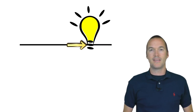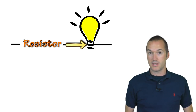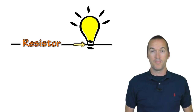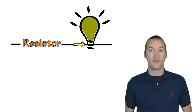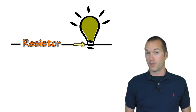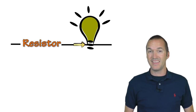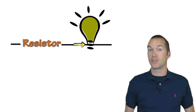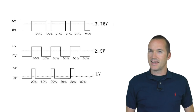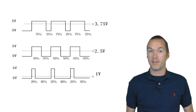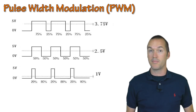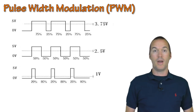When dimming an old incandescent bulb, a dimmer switch worked by adding a variable resistor into the circuit which would effectively limit the current flowing into the bulb. Because there was less current, the filament heated up less and therefore produced less light. Dimming an LED isn't quite as simple since they generally operate at narrow voltage and current ratings. Instead of setting less current, LED dimming is done by rapidly turning the current on and off in a process called pulse width modulation, or PWM.